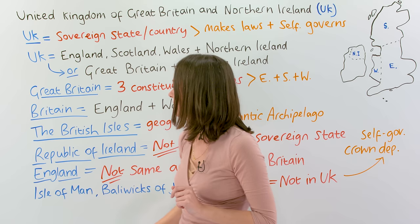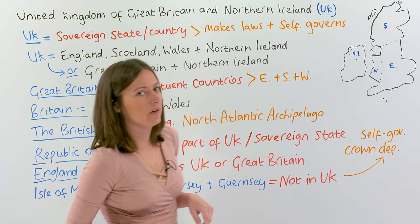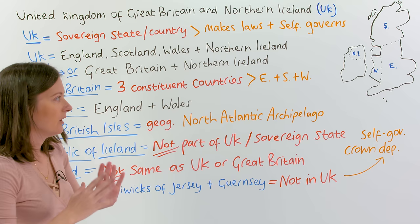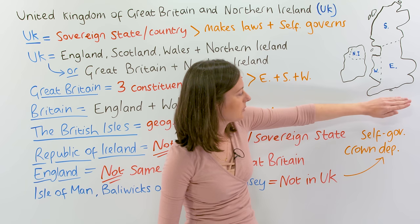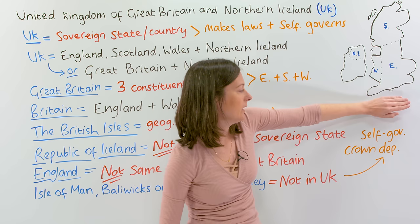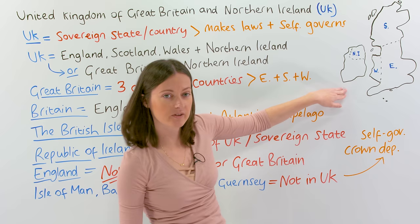We have another term called the British Isles. The British Isles is a geographic term, so we use it to describe a place on the map, and the British Isles would include everything we see here — perhaps except these islands. These islands are called Jersey and Guernsey, and they're closer to France, but the British Isles could describe everything here in a geographic sense.